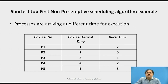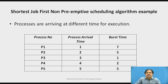By looking at the last column, we can judge that P3 has the smallest burst time. As the SJF mechanism requires, P3 should get the first chance of execution. However, we also have to consider the arrival times of the processes. So in this kind of execution, we must take into account both parameters: the arrival time of the process and the burst time.